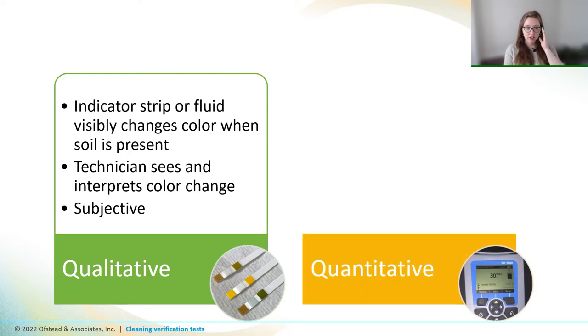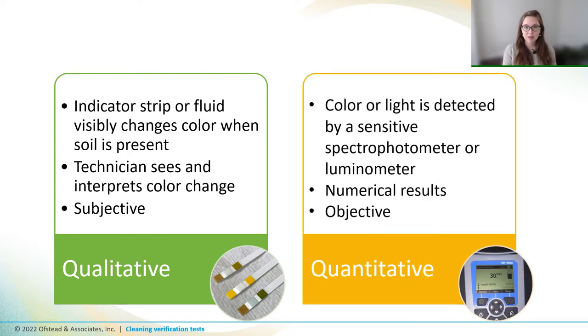Quantitative tests, on the other hand, measure a specific amount of soil. They may still rely on detecting a light or a color change, but the results are read by sensitive machines that provide a numerical result.